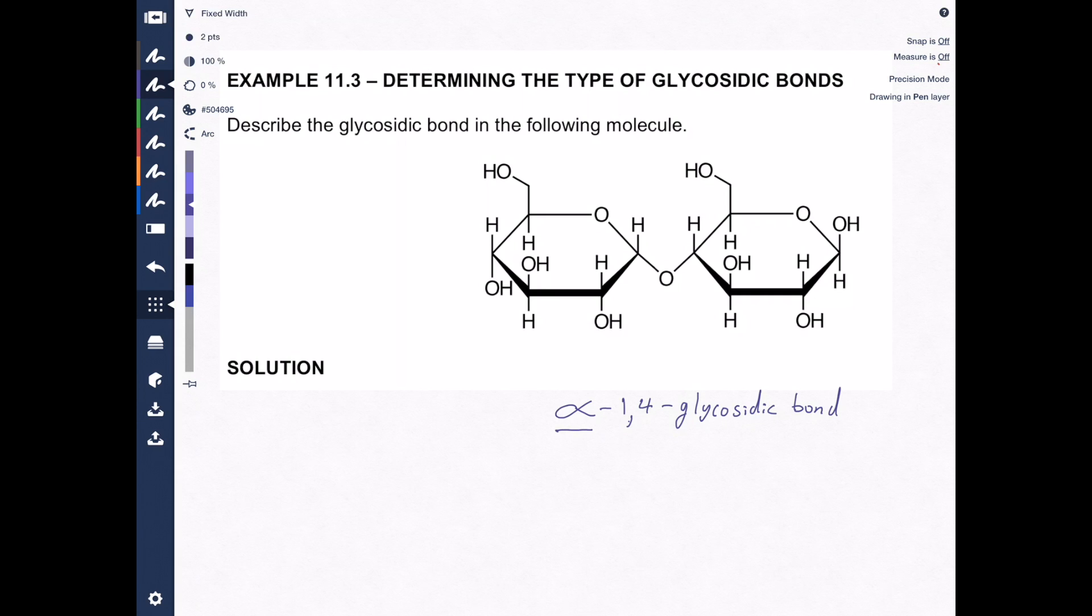Alpha. That means that this oxygen here is pointing in the downward position. It's going down towards the bottom of your page. The one means that carbon number one, the anomeric carbon, is part of the glycosidic bond.